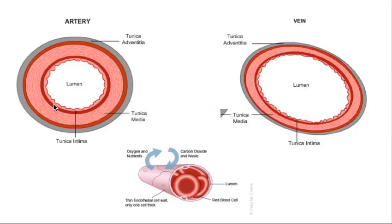So when the heart ejects blood into the large arteries, the arteries expand to accommodate the blood. That wall, or this muscle, is able to expand to allow more blood to go through it.